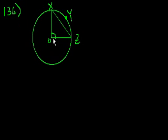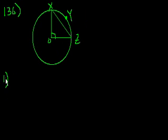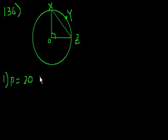If we can figure out the radius, we know circumference is 2π times the radius, and we'd be all set. Statement 1: the perimeter of triangle OXZ is 20 plus 10 square roots of 2.